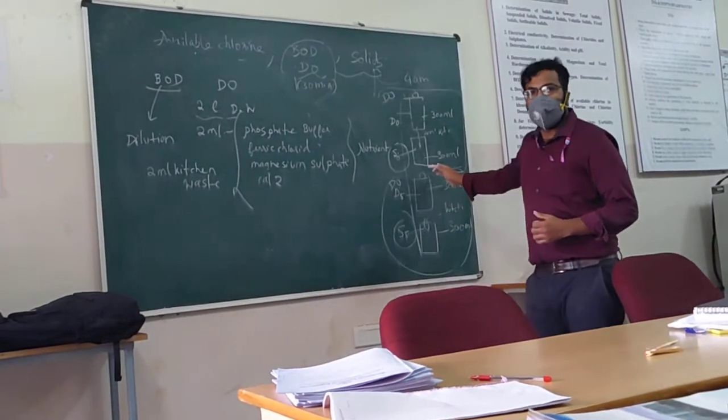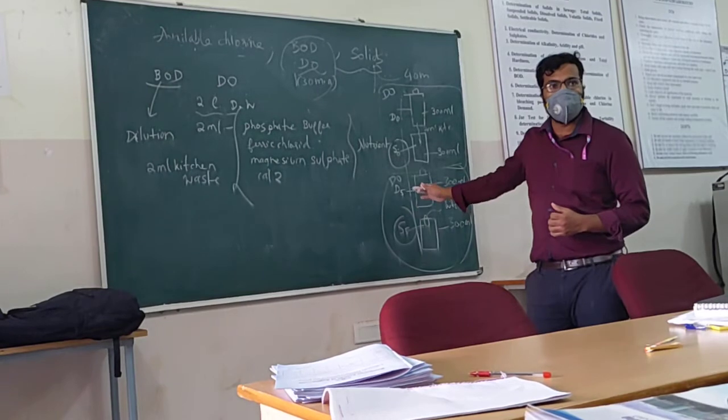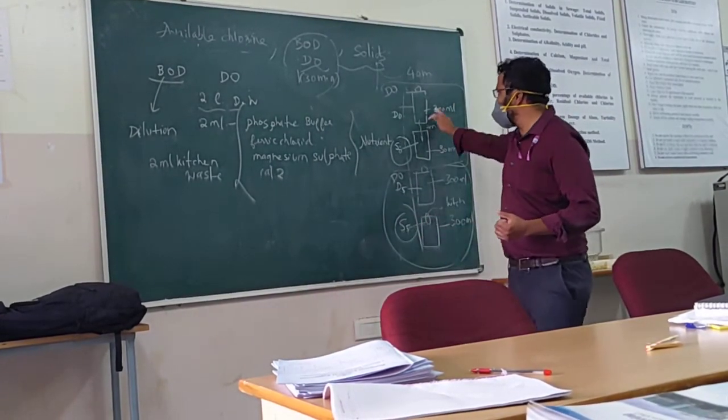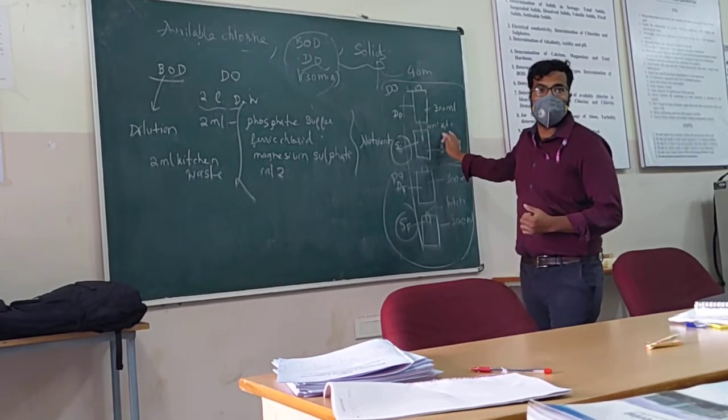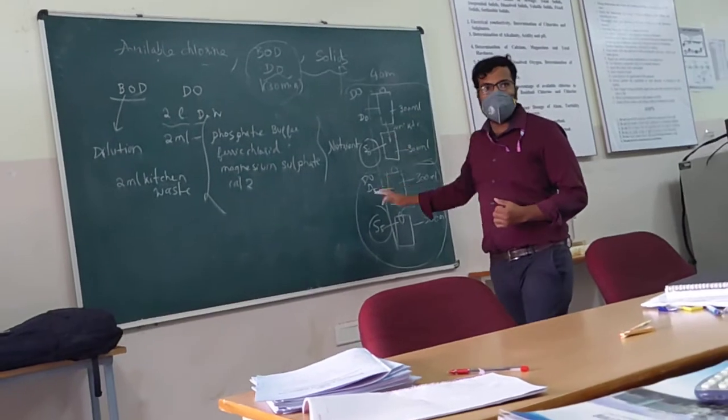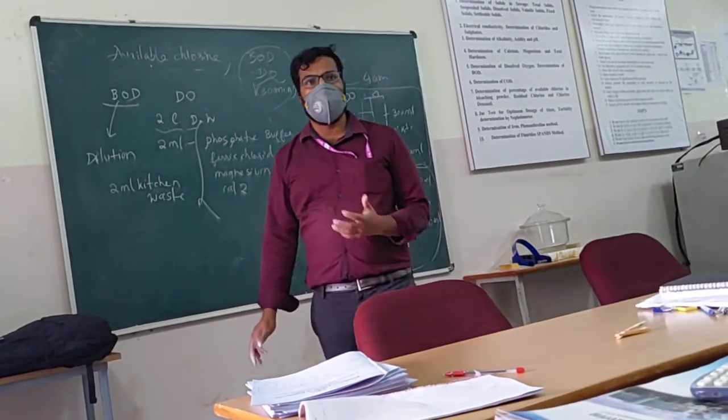So here some deviation will be there. After 5 days when you see, all microbes already consumed the oxygen. So 0th day we know initial oxygen level, this is final oxygen level. So when you just put it in the formula, you can find out BOD.